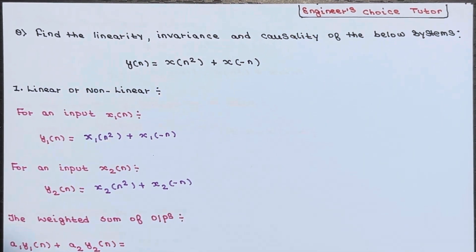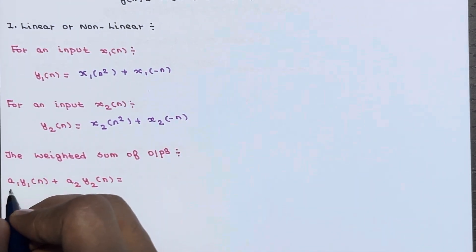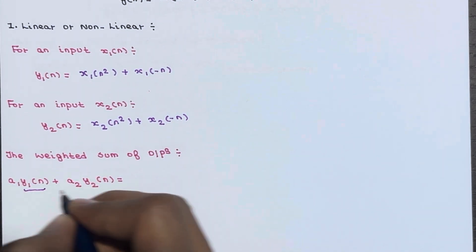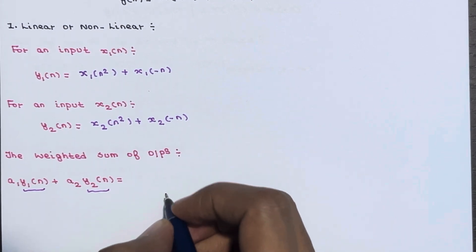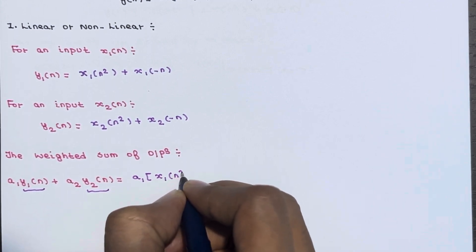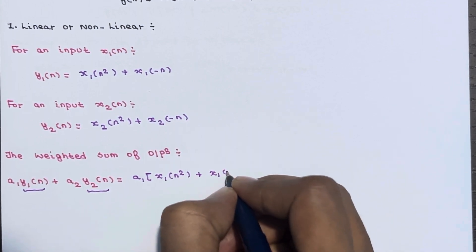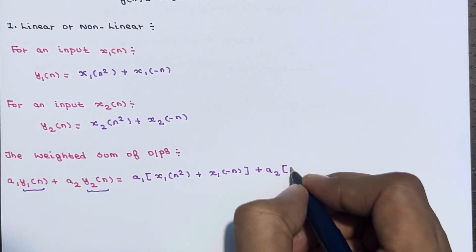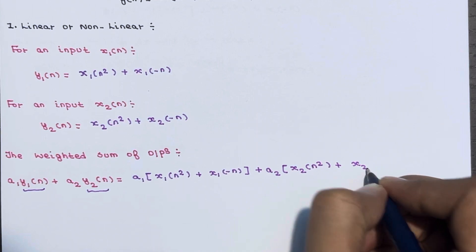Now you have to calculate the weighted sum of outputs, which means you have to calculate a1 times y1 of n plus a2 times y2 of n. We already know y1 and y2, so just multiply. It becomes a1 times [x1 of n squared plus x1 of minus n] plus a2 times [x2 of n squared plus x2 of minus n].